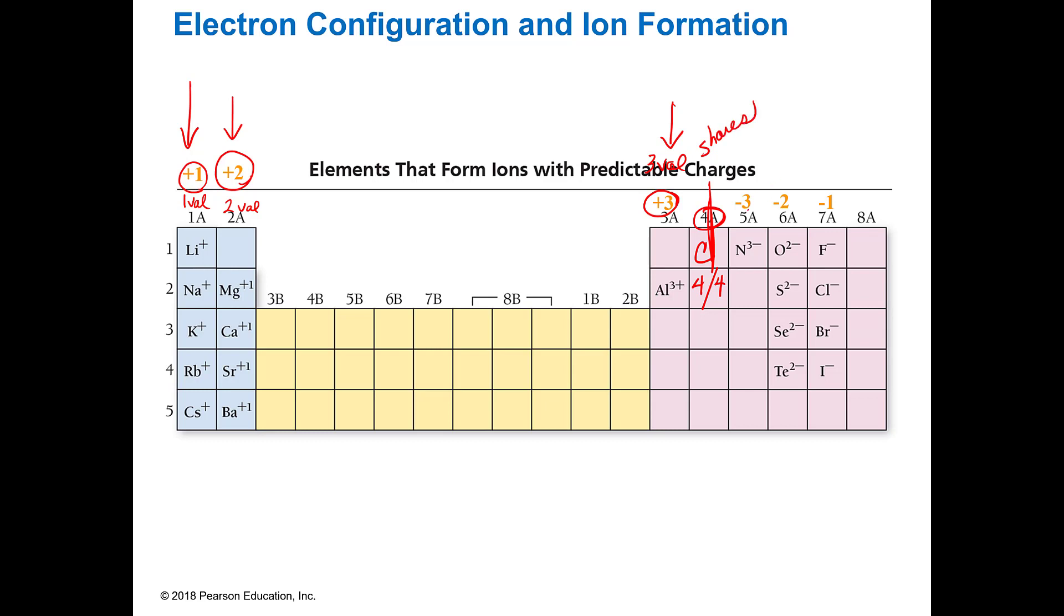And then you just go negative 3 for group 5A, negative 2 for group 6A, and negative 1 for group 7A. And we don't ionize group 8. So it's important that you remember that because you can predict the charges that these ions are going to make. And ions are created usually when we dump something in water and they dissociate in water and turn into ions.